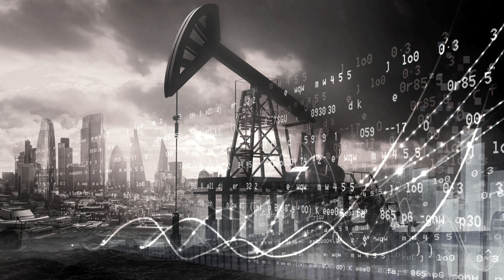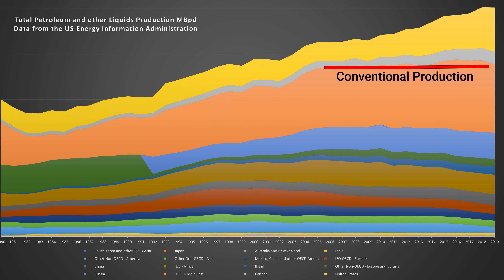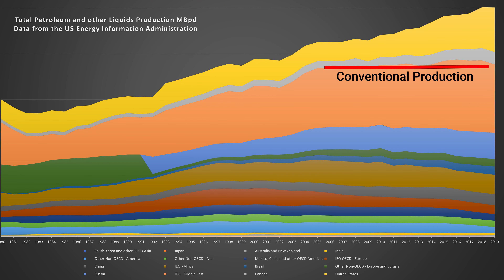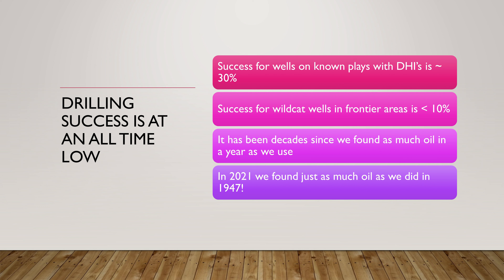Filling that pipeline is becoming harder. Much of the oil that fills it comes from giant oil fields, most of which were discovered before I entered the industry in 1977. Most of those giant fields are now well into post-plateau decline. Conventional oil production also plateaued in 2004 and has hardly changed since, despite oil prices being higher than they are today for the 10 years between 2004 and the price collapse in 2014. And in 2021, we found the same amount of oil as we did in 1947.